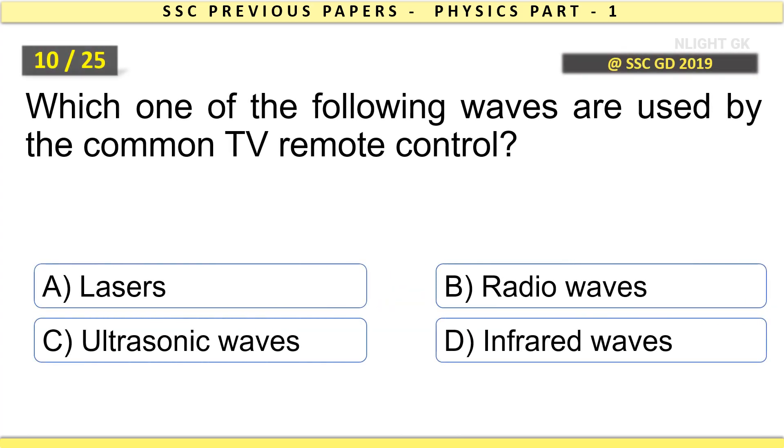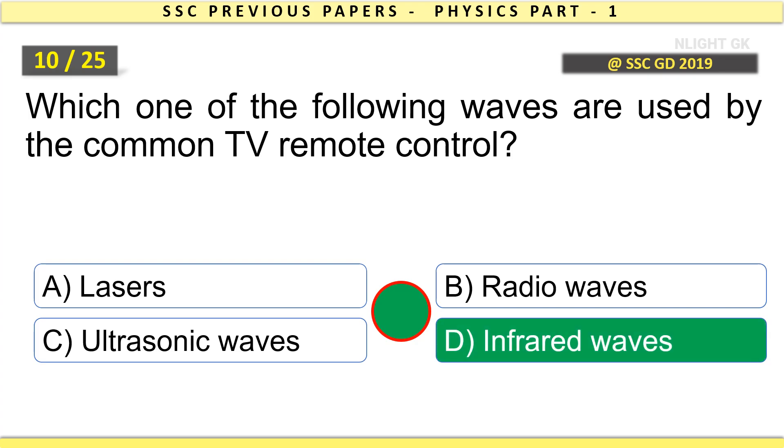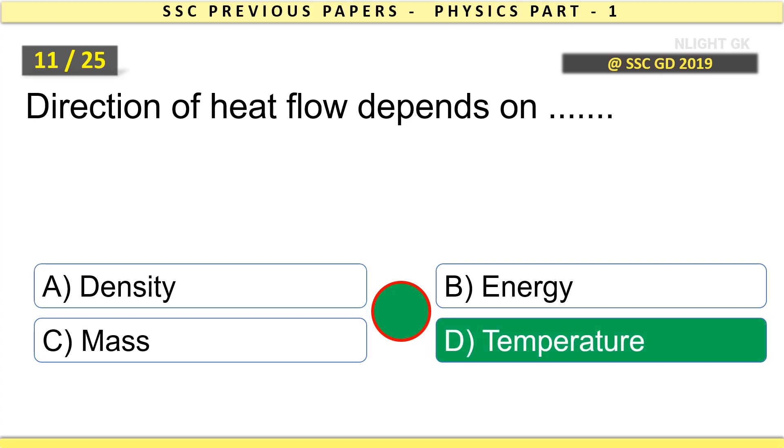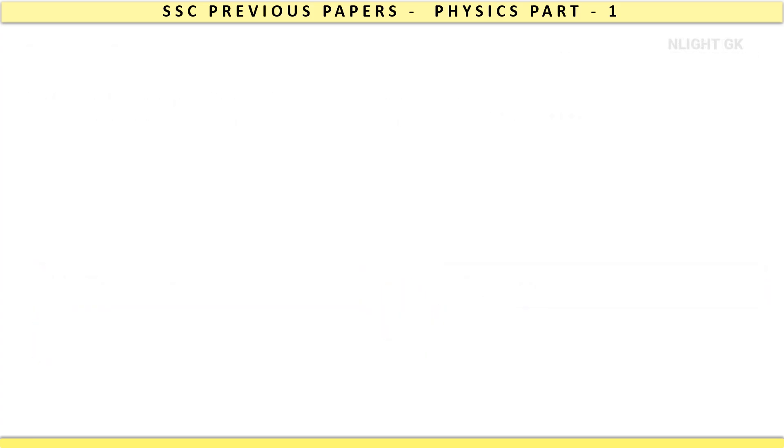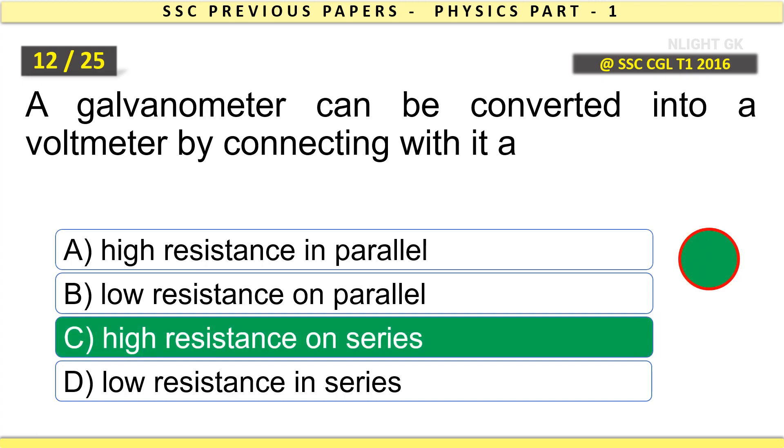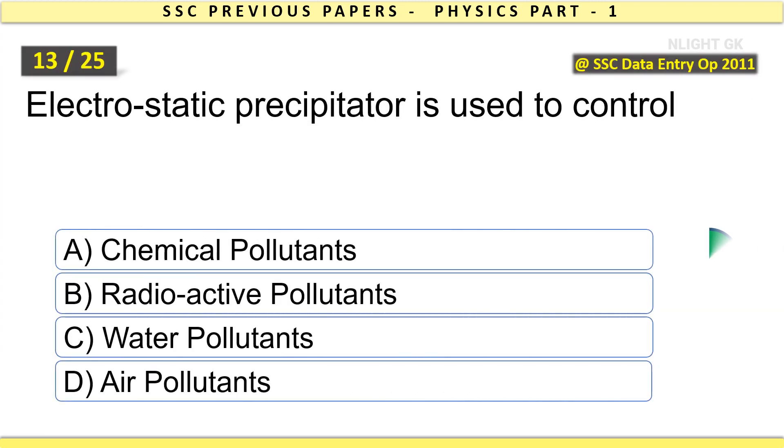Which one of the following waves are used by the common TV remote control? Infrared waves. Direction of heat flow depends on temperature. A galvanometer can be converted into a voltmeter by connecting with it a high resistance in series.